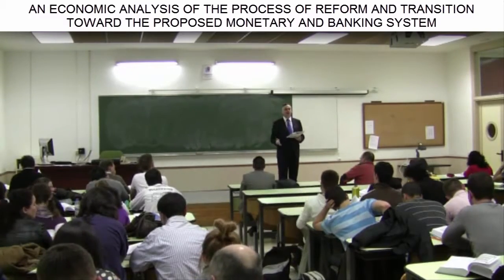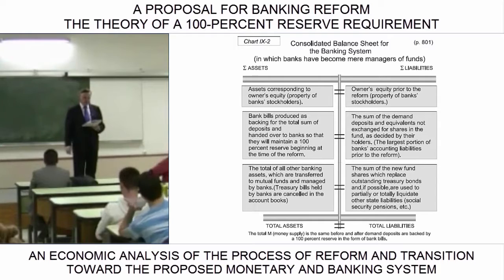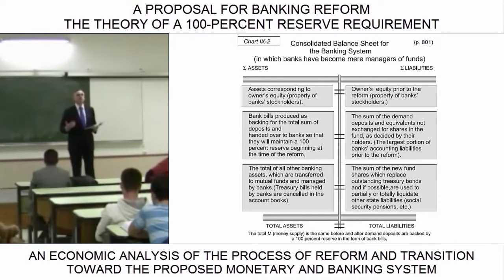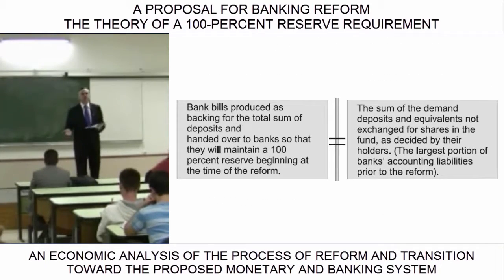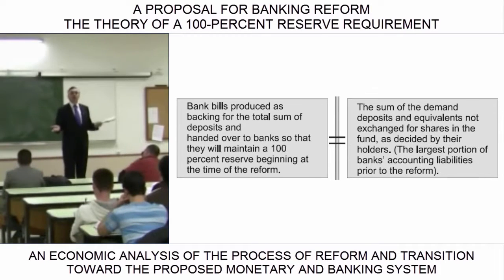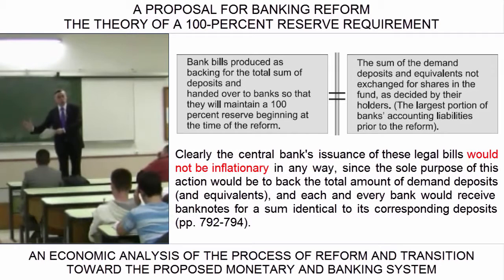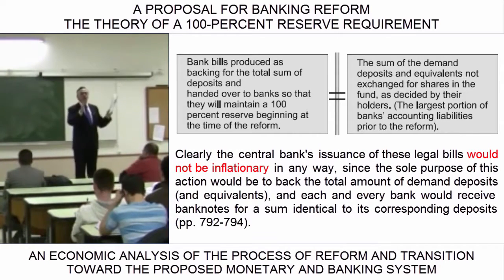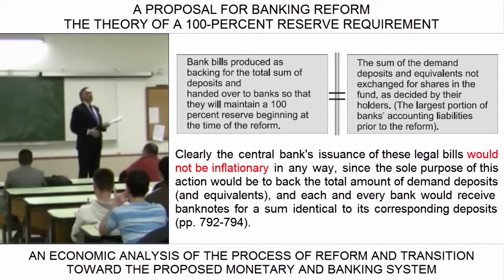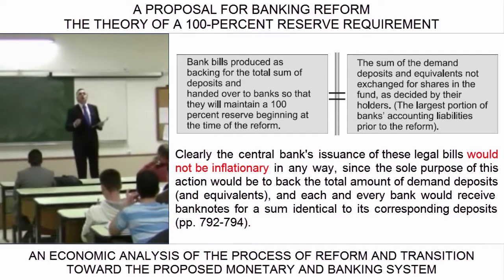You will all find this easy to understand if we look at this chart, which reflects the consolidated balance sheet of the assets and liabilities of the banking system after the transition. The transition would be very simple, and would consist of issuing the paper currency necessary to back all bank deposits and equivalents 100%. The euros would be printed and given to private bankers, and from that point on, all of their deposits would be perfectly counterbalanced by the newly created money the bankers received and put away in their vaults, maintaining a 100% reserve ratio.